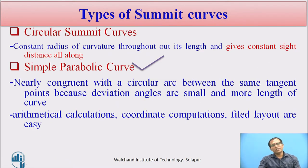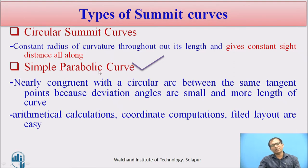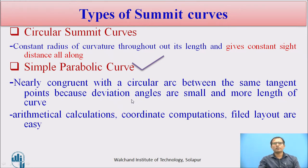The ideal shape of the summit curve: a circular summit curve gives constant sight distance, which is good. However, the shape we follow is the parabolic curve. For smaller angles, both circular and simple parabolic curves follow the same path, but we prefer the parabolic curve because arithmetic calculations, coordinate computations, and field layout are all easier.